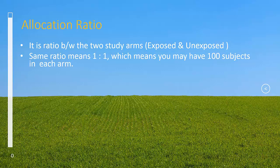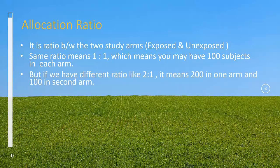Same ratio means 1 into 1 or 1 is to 1, which means you may have 100 subjects in each arm. But, if we have different ratios, like 2 is to 1, it means 200 participants or 200 sample size in one arm and 100 in second arm.